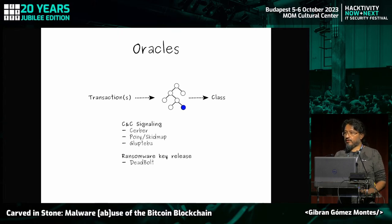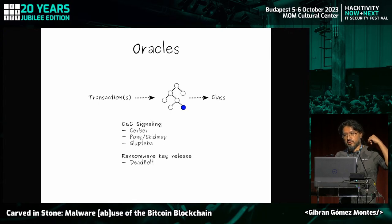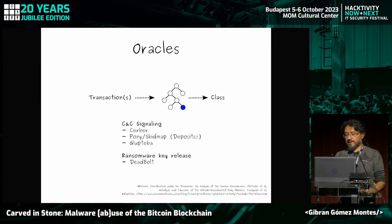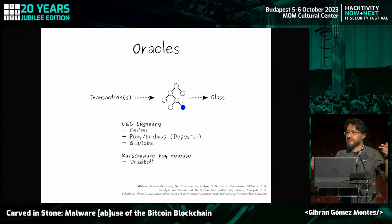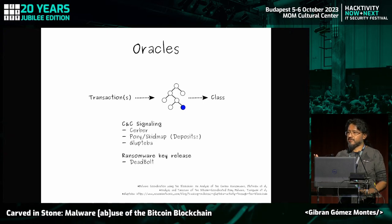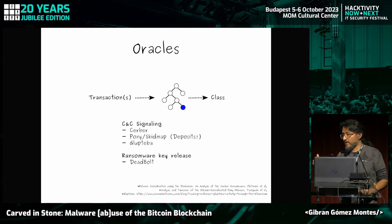We've produced four of these oracles in our previous works, most for C2 signaling operations that use withdrawals from addresses to do the signaling. There's a funny case with Pony and Skidmap: they used deposits instead of withdrawals. Since anybody can deposit to an address, if you use deposits to signal the next C2 location, somebody else can make deposits on your behalf and redirect the entire botnet to another server. That's exactly what Taniguchi et al. did — they reported how they took over the Pony botnet.